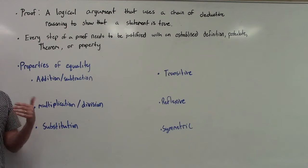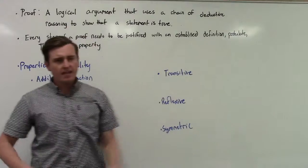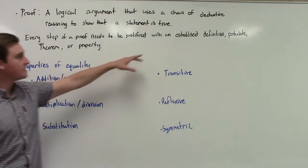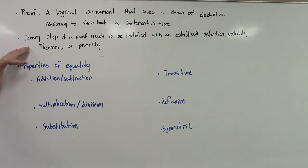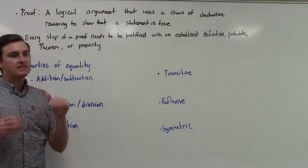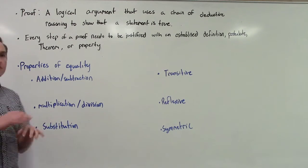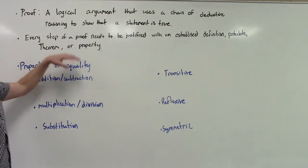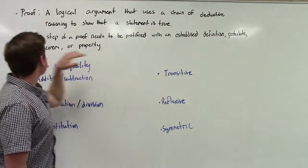A proof is a logical argument that uses a chain of reasoning — and usually it's deductive reasoning — to show that a statement is true. Most of the reasoning we're going to be doing is deductive reasoning, using definitions, postulates, theorems, and things. Every step of a proof needs to be justified. You need to be able to say: I can do this because. Each step is solid — I can say this because of this theorem, this axiom, this definition. Every step needs to be justified with an established definition, postulate, theorem, or property.